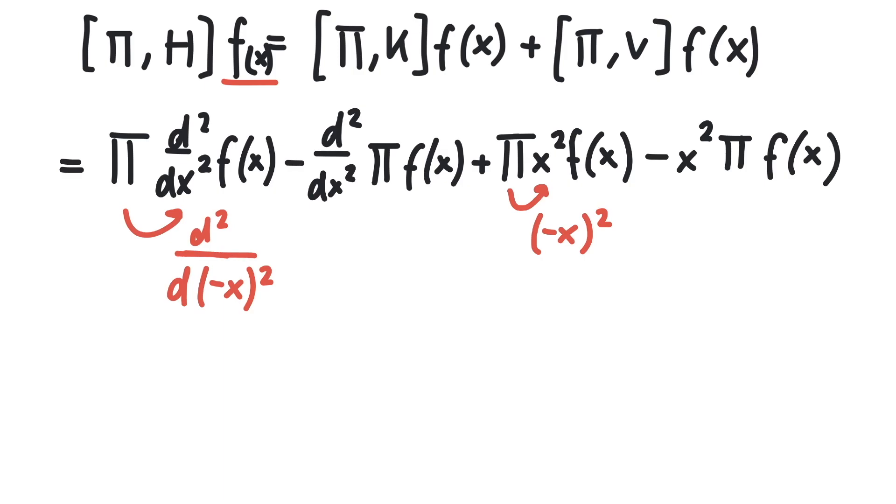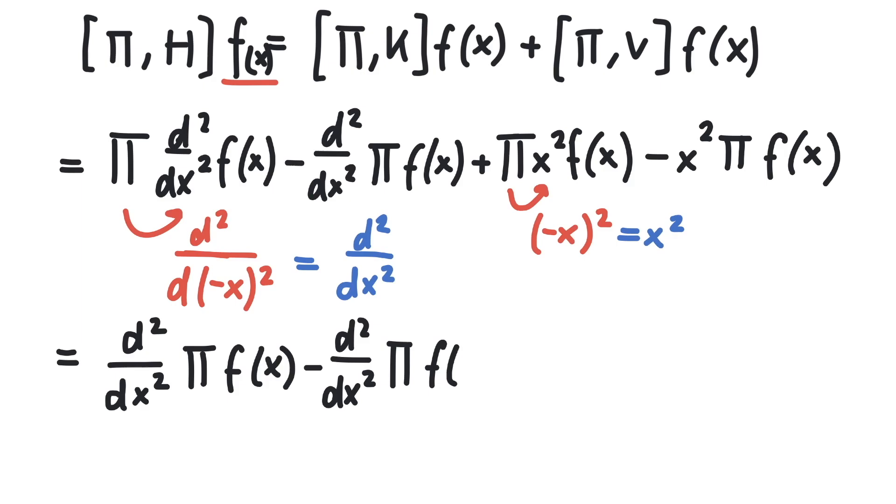But since minus x squared is the same as x squared, we can also write it like this. This means the first term will look similar like the second term. And the third term looks similar to the fourth. And we see that the commutator is zero.